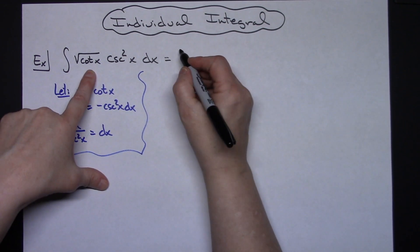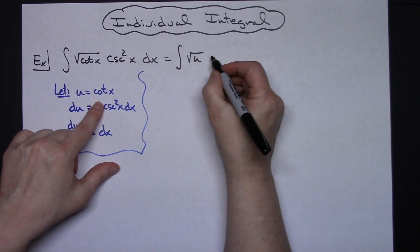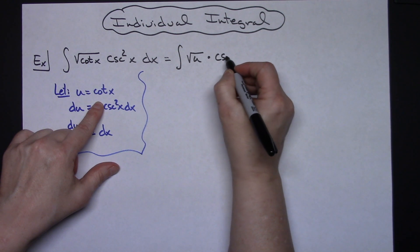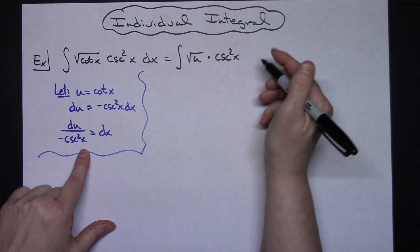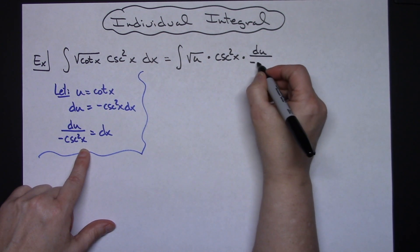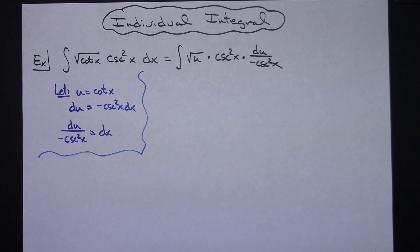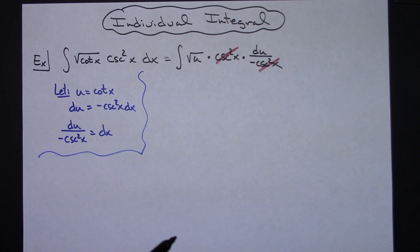Alright, so we'll have the integral of the square root of u. We'll go ahead and put that in times the cosecant squared of x is still going to be there. Replacing dx with what we set that equal to we'll have du over a negative cosecant squared x. And then that's going to nicely let those cosecant squared x's cross out.